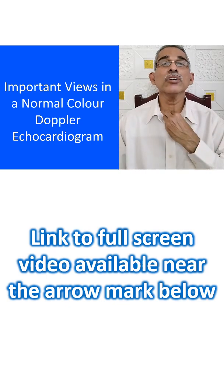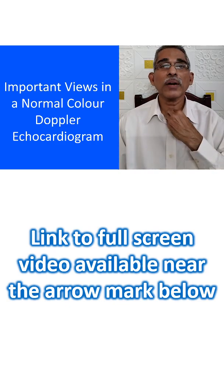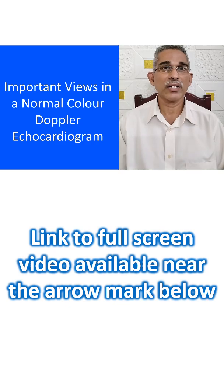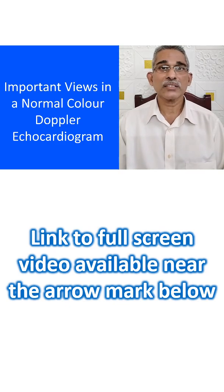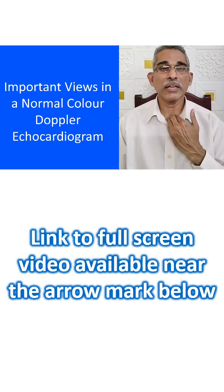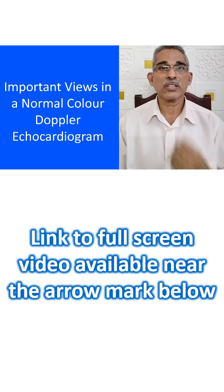The next view is the suprasternal view, mainly for the aorta — the descending aorta and arch of aorta. If there is a patent ductus arteriosus or coarctation, that can be better imaged from the suprasternal view.